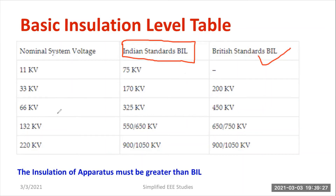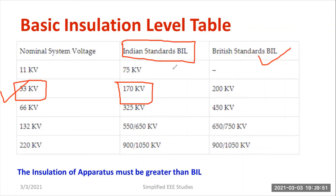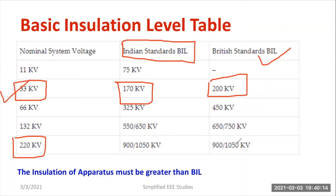Let us make a comparison. Suppose you are operating a system at 33 kV nominal system voltage. If I consider Indian Standards BIL, I would design the insulation for a dielectric strength of 170 kV. If I consider British Standard BIL, I would provide a dielectric strength of 200 kV — that is the difference. In the case of a 220 kV system, both the Indian and British standards are identical: the insulation is maintained at 900 to 1050 kV in both cases.